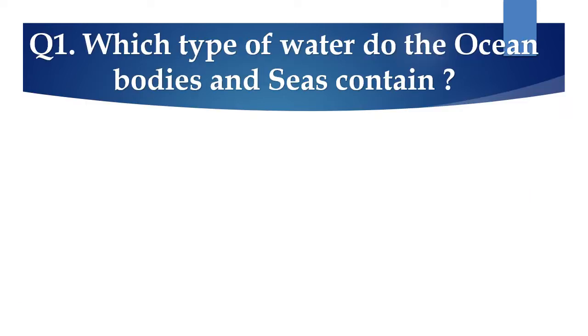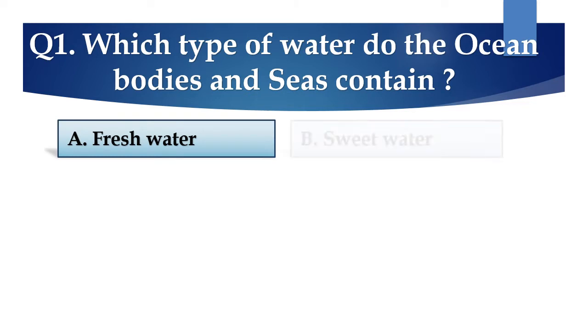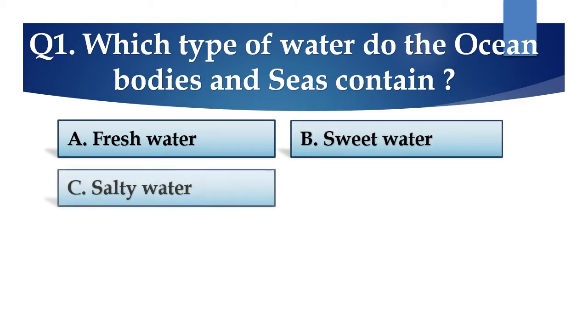Question number 1: Which type of water do the ocean bodies and seas contain? The options are: A. Fresh water, B. Sweet water, C. Salty water, and D. None of the above.